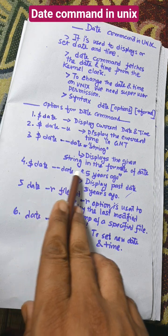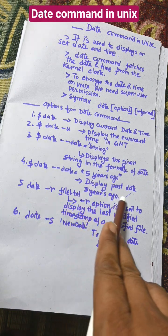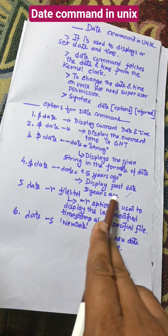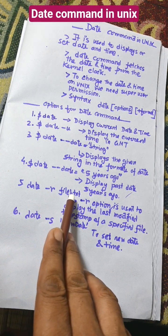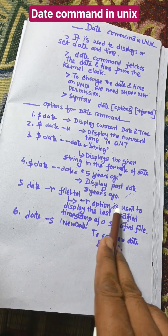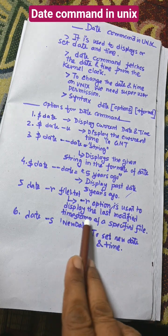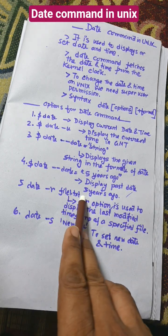$date --date='5 years ago' displays the past date five years ago from the current date. date -r file1.txt is used to display the last modified time of the specified file.